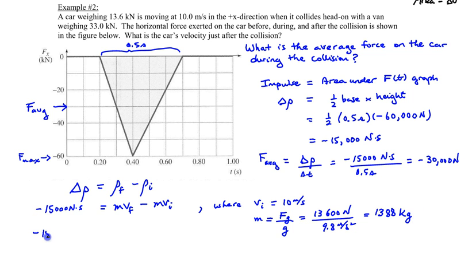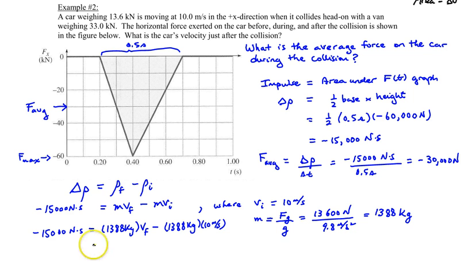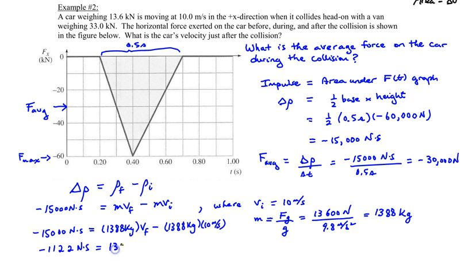Substituting in: negative 15,000 newton-seconds equals 1,388 kg times the final velocity, minus 1,388 kg times 10 m/s. Bringing the initial momentum term to the other side gives negative 1,122 newton-seconds equals 1,388 kilograms times the final velocity. Dividing both sides by the mass gives a final velocity of negative 0.809 meters per second.